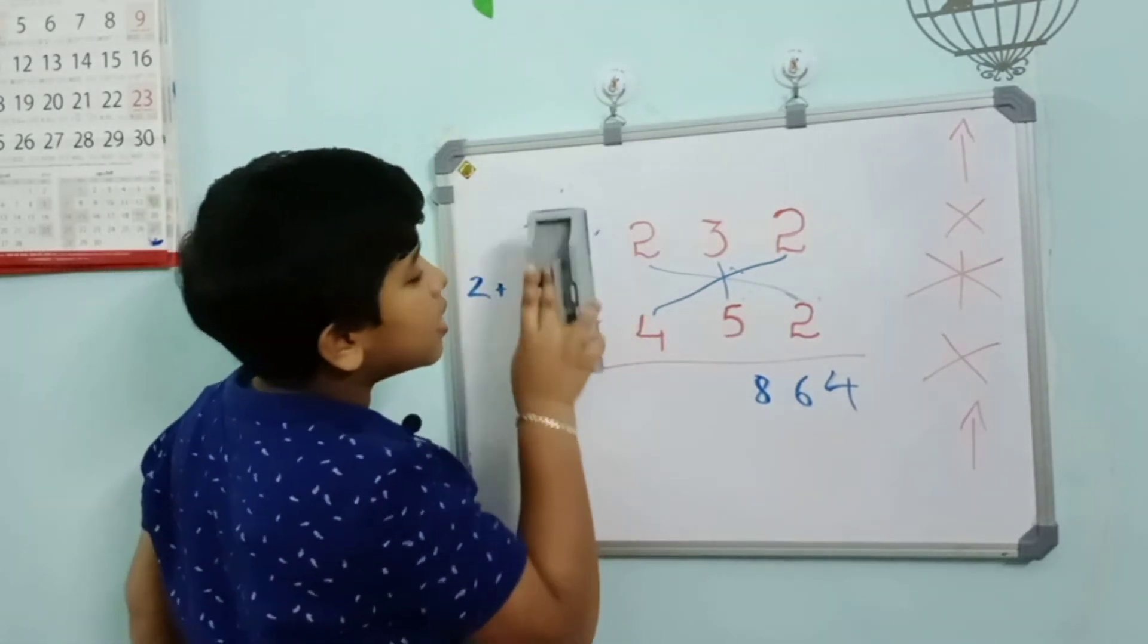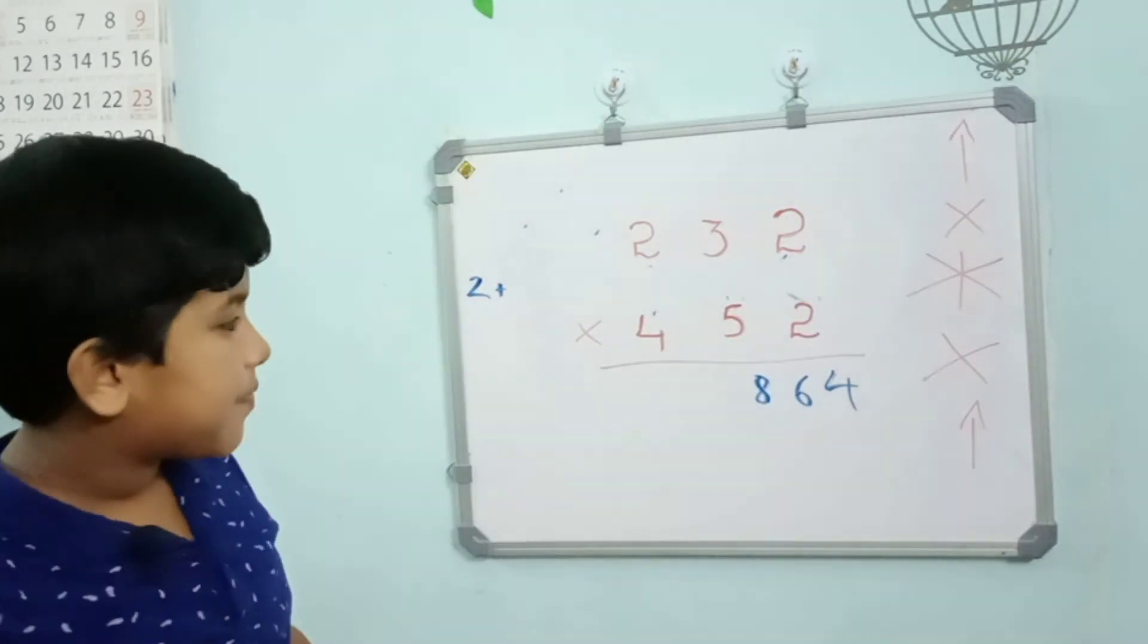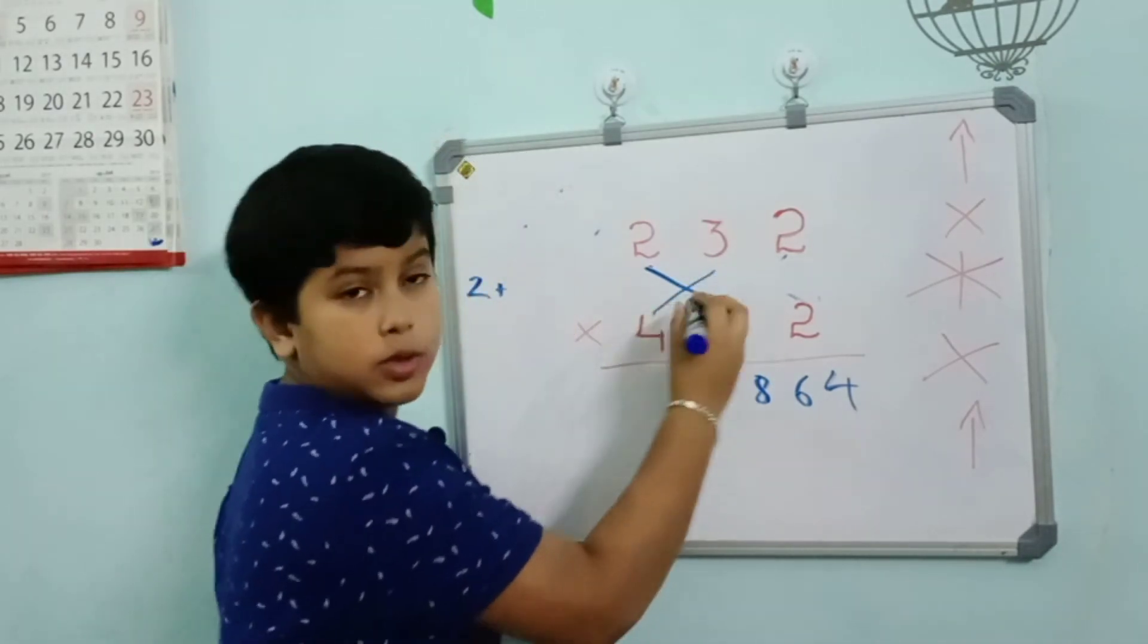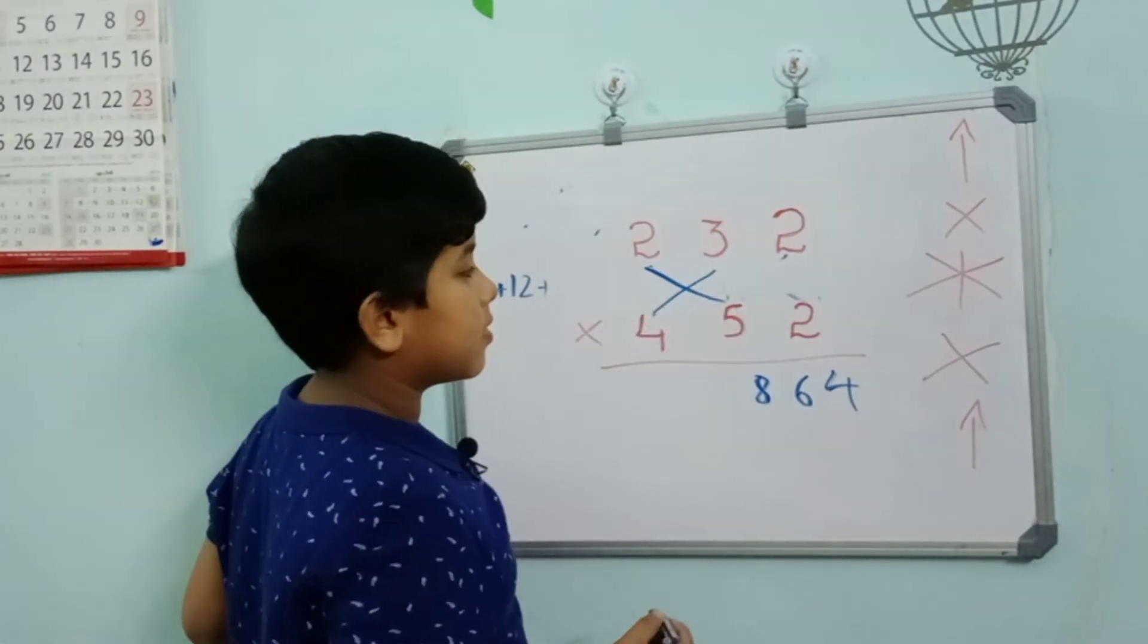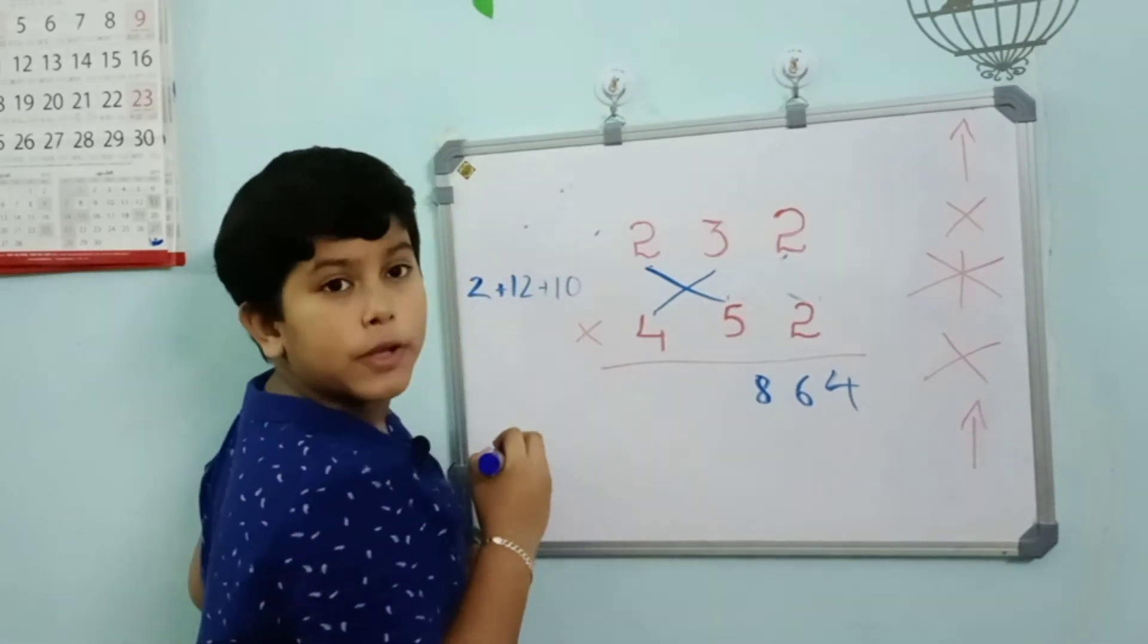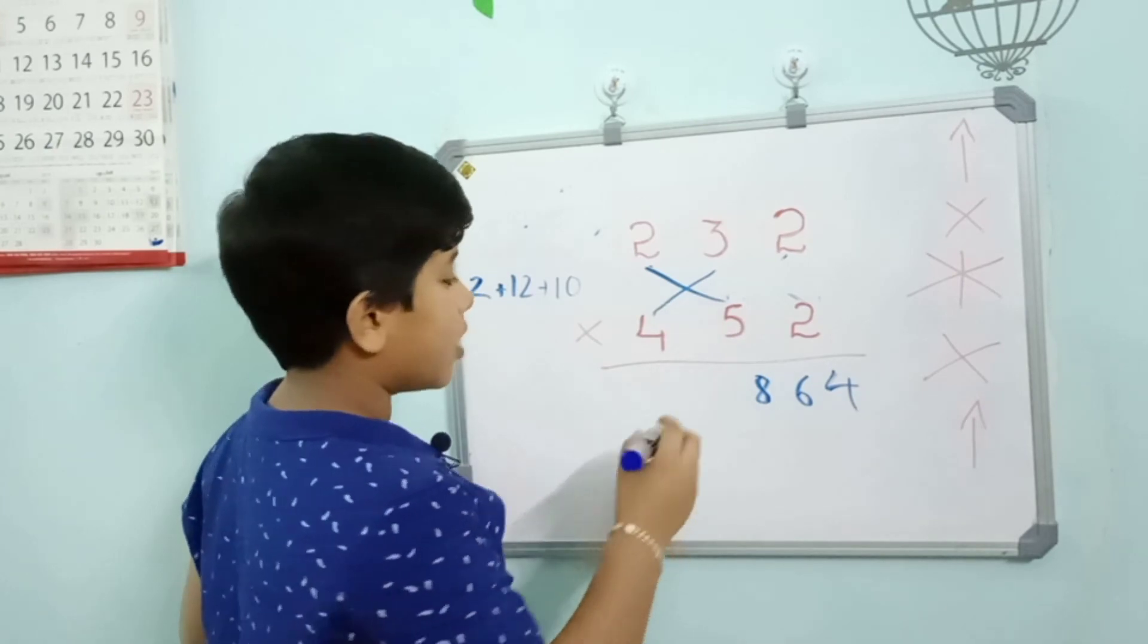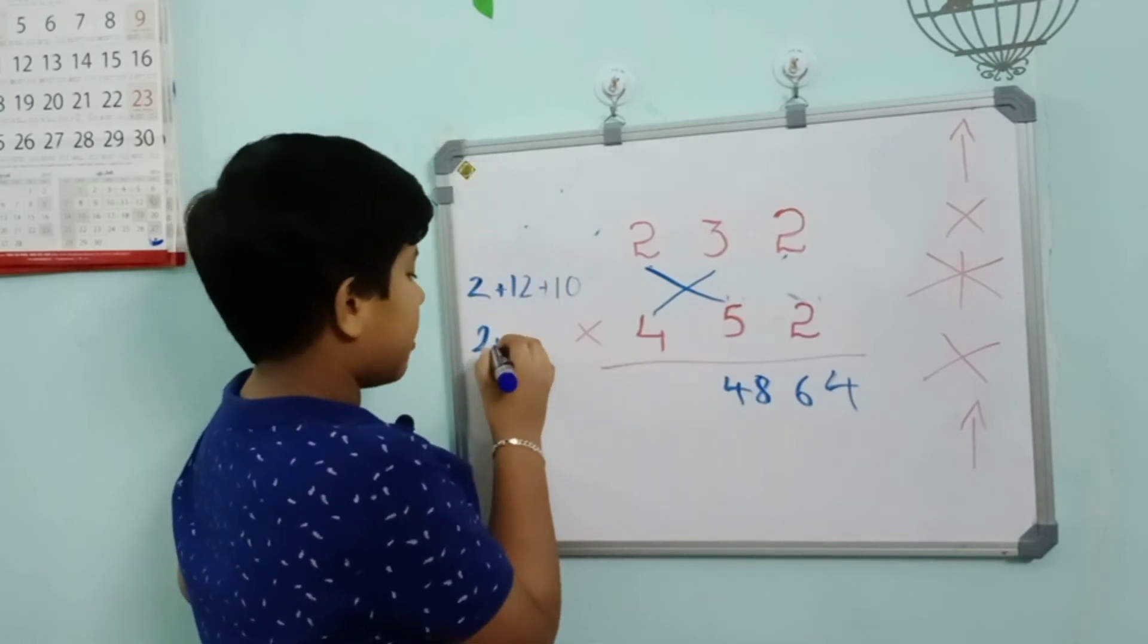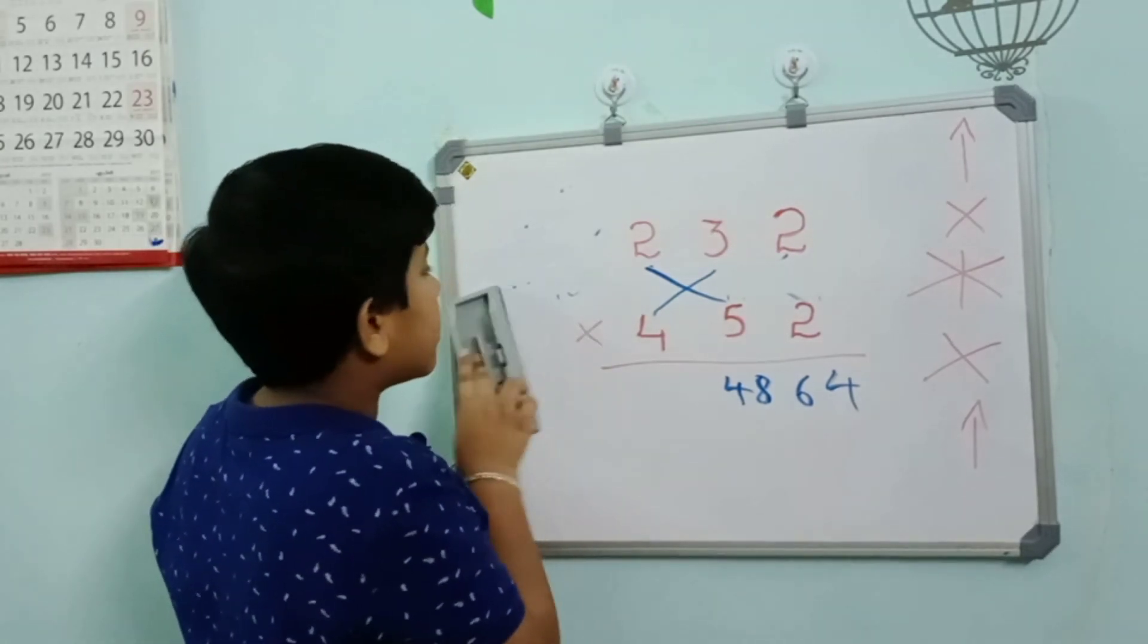The next one is cross. 4 into 3 equals 12, plus 5 into 2 equals 10. 2 plus 12 equals 14, plus 10 equals 24. You should write 4 here and 2 as a carry forward.